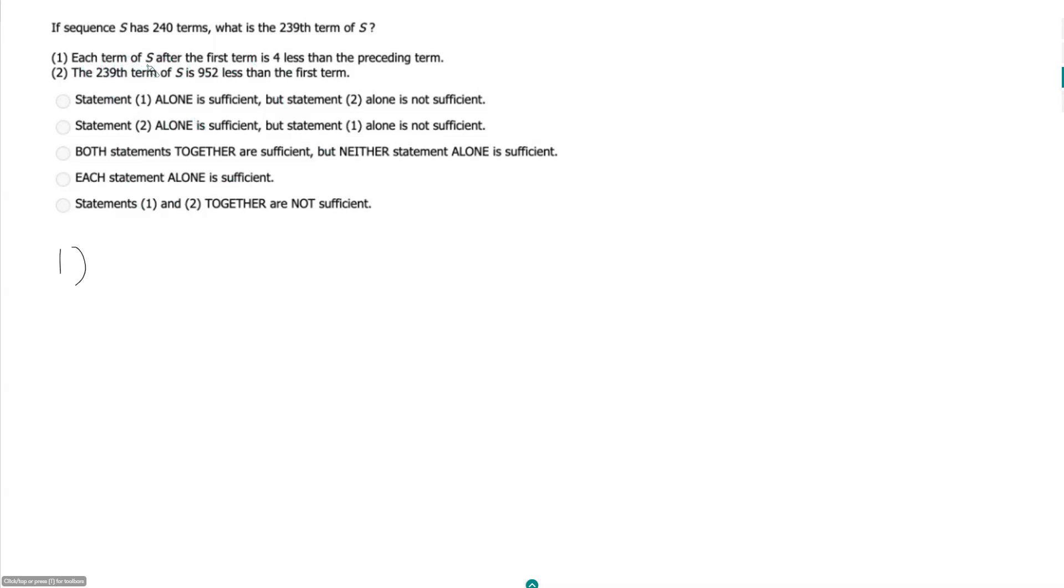Statement 1, each term of S after the first term is 4 less than the preceding term. In other words, our sequence, if it starts with some value X, so the next term will be X minus 4, and then the next one will be X minus 8, and the next one will be X minus 12, etc.